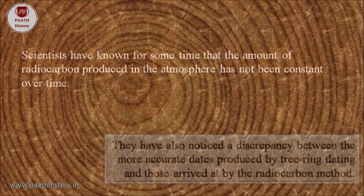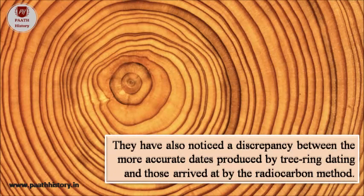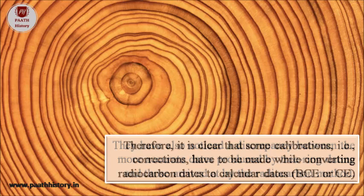Scientists have also noticed a discrepancy between the more accurate dates produced by tree-ring dating and those arrived at by the radiocarbon method. Therefore, it is clear that some calibrations — that is, corrections — have to be made while converting radiocarbon dates to calendar dates, that is BCE or CE.